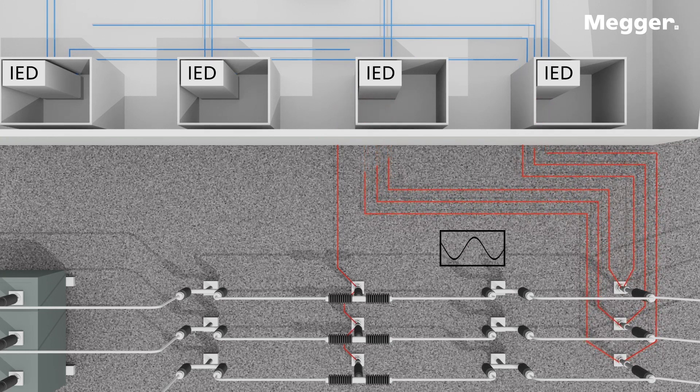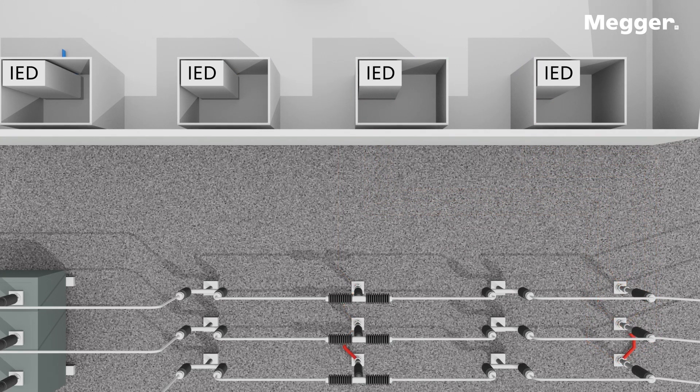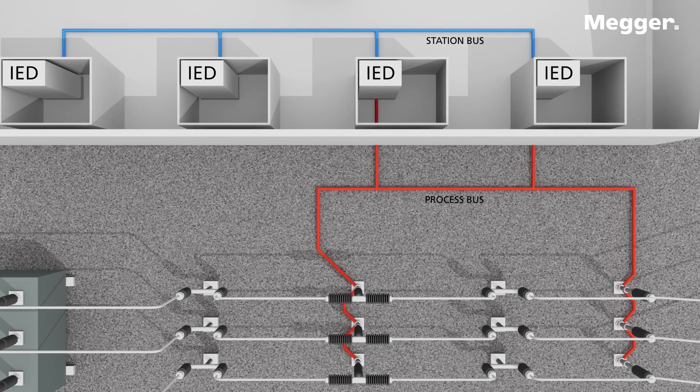In modern digital substations, the IEDs are connected through the station bus and the instrument transformers through the process bus.